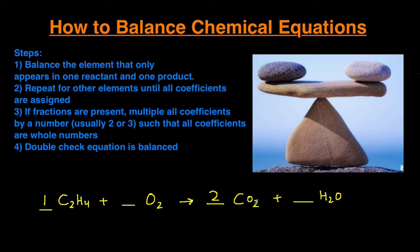We can either balance the oxygen or we could balance the hydrogens. Oxygen is in multiple products, so I'm going to leave that to the very end. Let's balance the hydrogens. We have four hydrogens on the left side and we currently have two hydrogens on the right side. So that means I need a coefficient of two right here to give us four hydrogens on both sides.